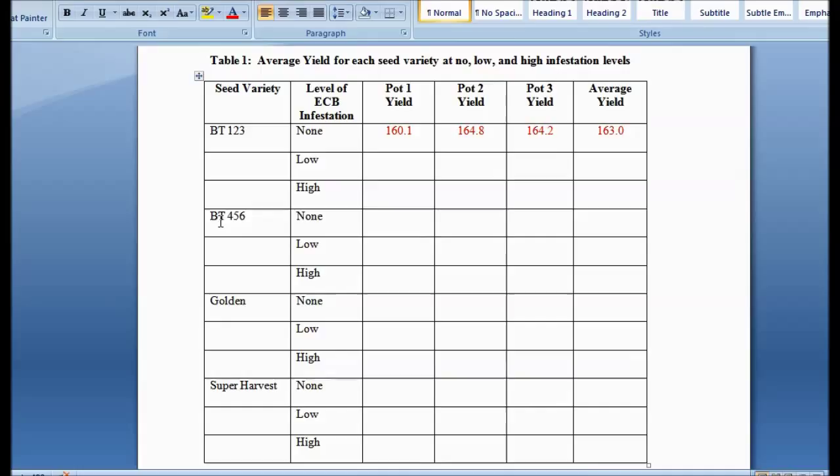You're going to put them in the chamber with no infestation, low infestation, and high. And there'll be three pots in the chamber and you'll get the measurements for each of those pots after they grow and figure out the average. So this table takes quite a bit of time to finish. Let me show you how you're going to do it.